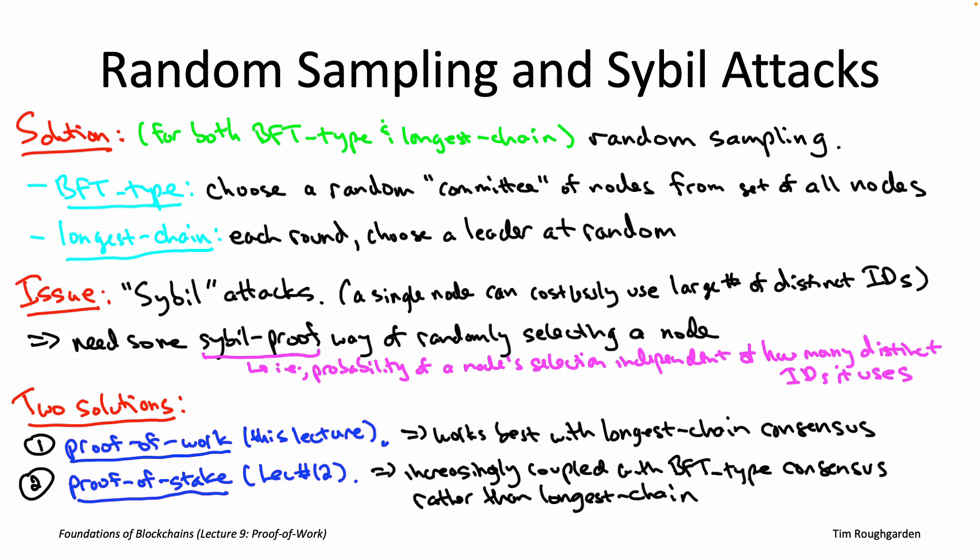Proof of stake is the currently central approach to the crucial problem of Sybil resistance that any permissionless consensus protocol must somehow solve. So how does it work? We'll start talking about that in the next video.